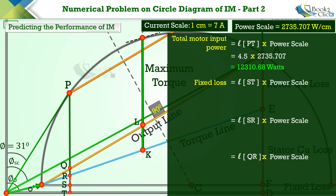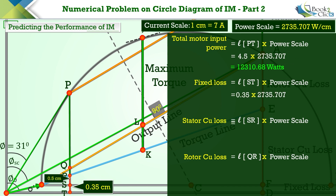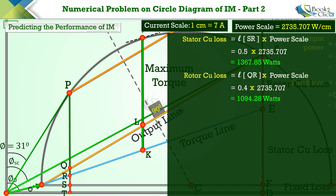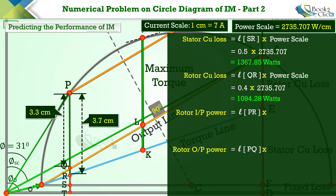Multiply the lengths of lines ST, SR, and QR by the power scale to get the values of fixed loss, stator copper loss, and rotor copper loss respectively. The length of ST is 0.35 centimeters, SR is 0.5 centimeters, and QR is 0.4 centimeters. The values are: fixed loss 957.5 watts, stator copper loss 1,367.85 watts, and rotor copper loss 1,094.28 watts.